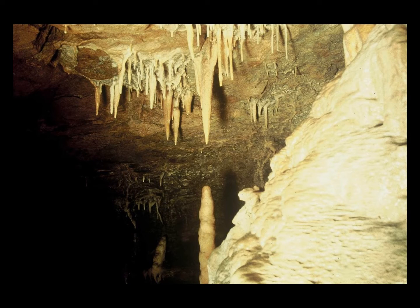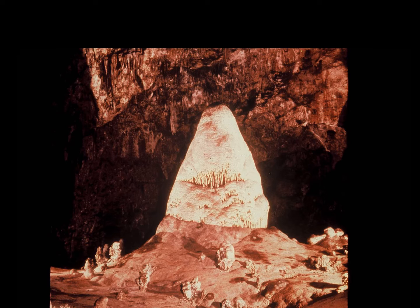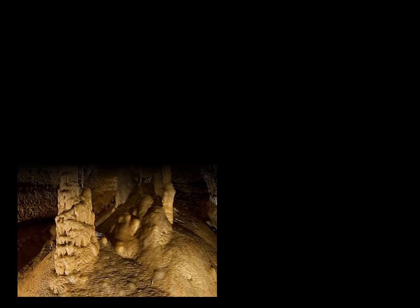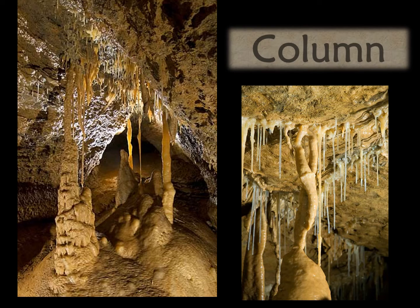When drippage falls to the floor from the stalactites above, it is deposited in the form of a stalagmite. When a stalactite and a stalagmite grow together, it's a hard word to remember, but we call them columns — just like columns we find in buildings.